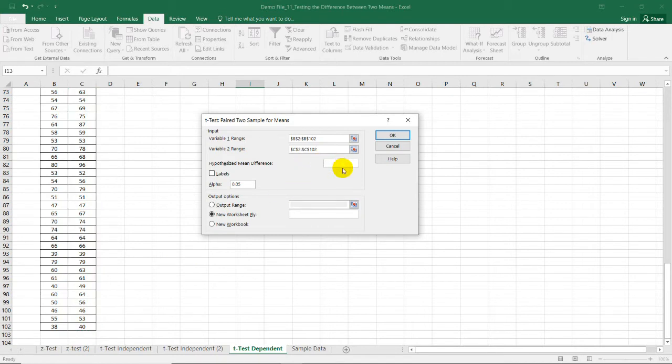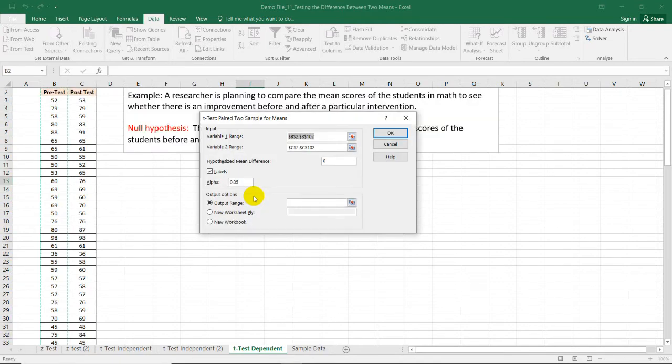After selecting it, we have the hypothesized mean difference of zero. We just put zero here because we are assuming that the difference in the mean is not different as stated in our null hypothesis. The labels are included, and our alpha level will be 0.05 for our level of significance.